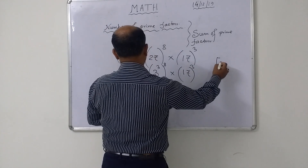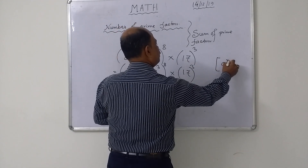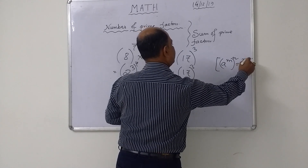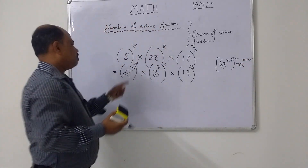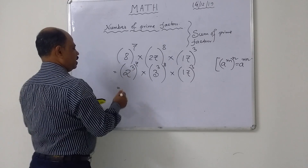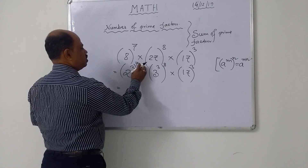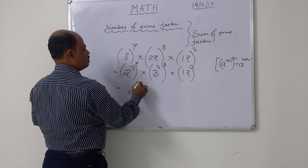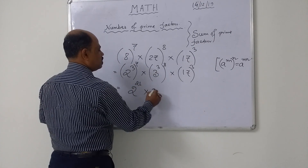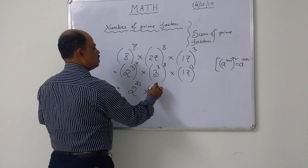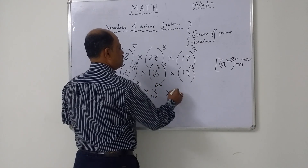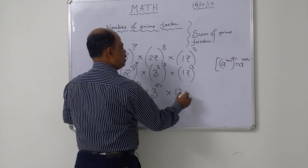From the laws of indices, when a power is raised to another power, the powers are multiplied. So it becomes 2 to the power 21, then 3 to the power 24, and 17 to the power 3.